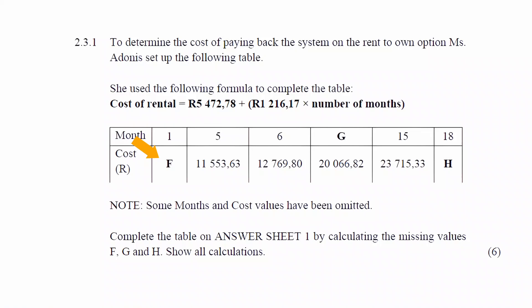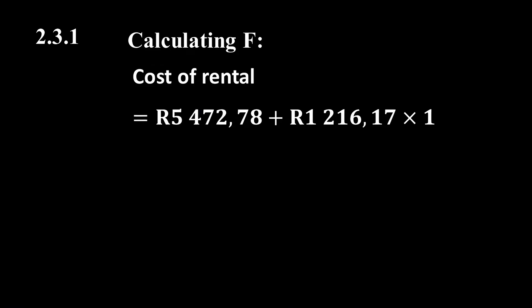We start by calculating F, which is the total amount paid for renting the solar power system for one month. Substituting 1 for the number of months into the formula gives us R5,472.78 + R1,216.17 × 1. Simplifying this equation gives us the value for F of R6,688.95.